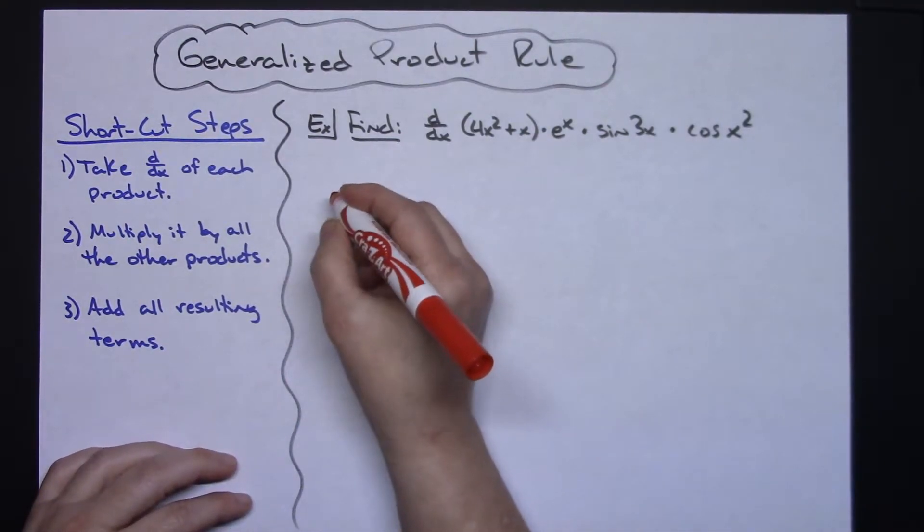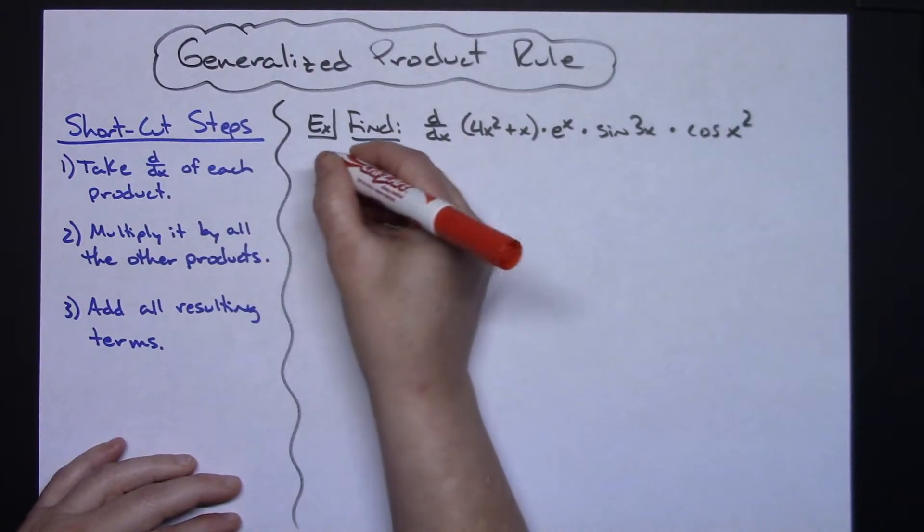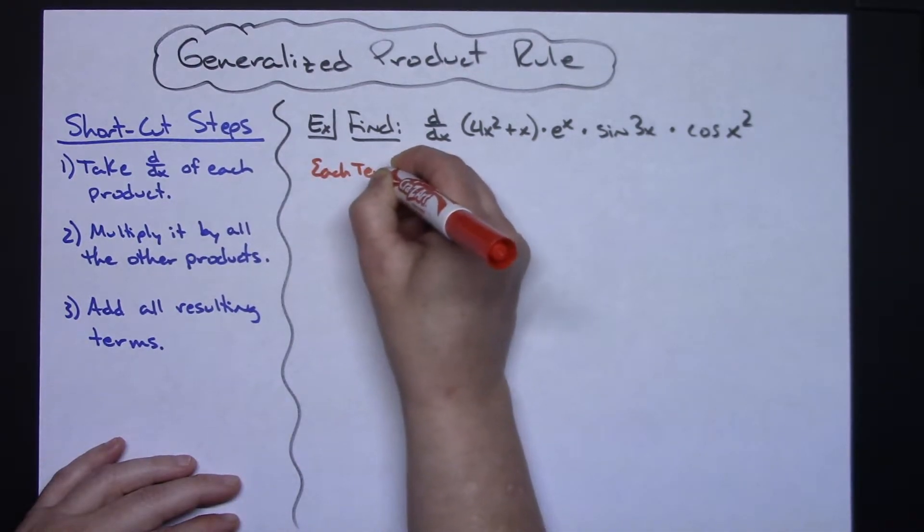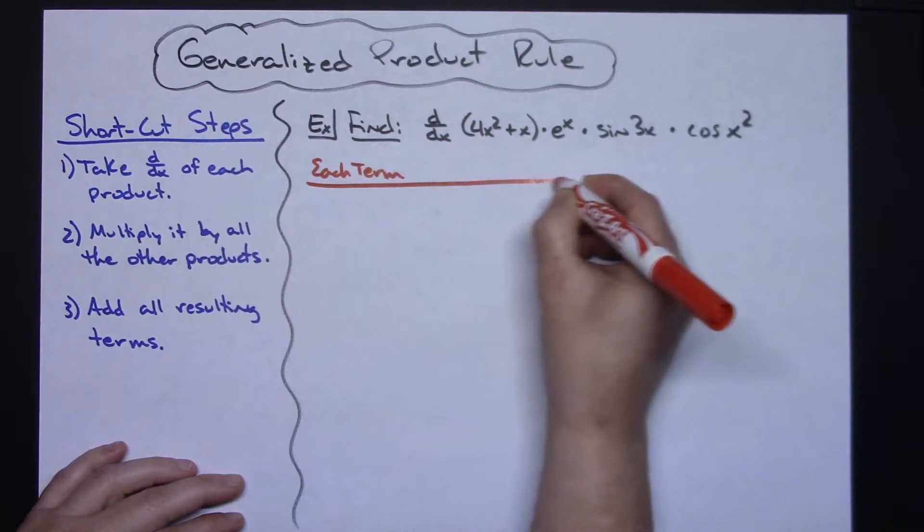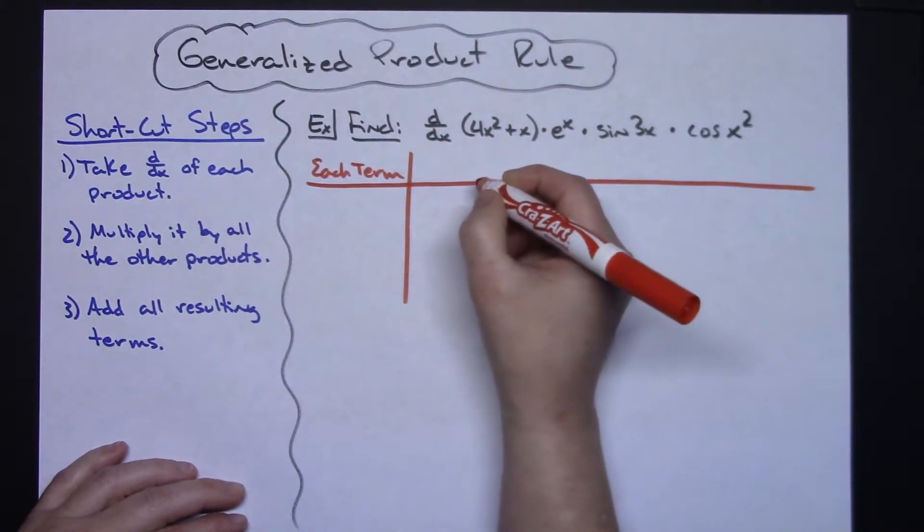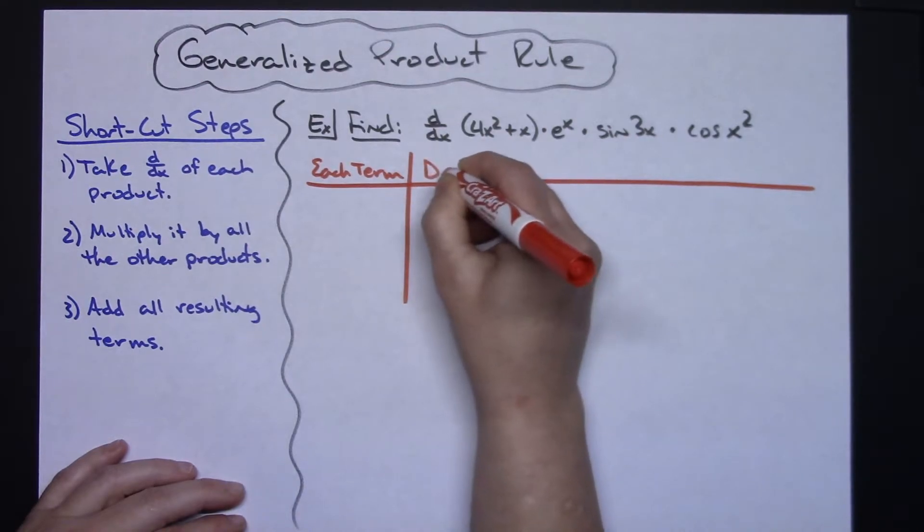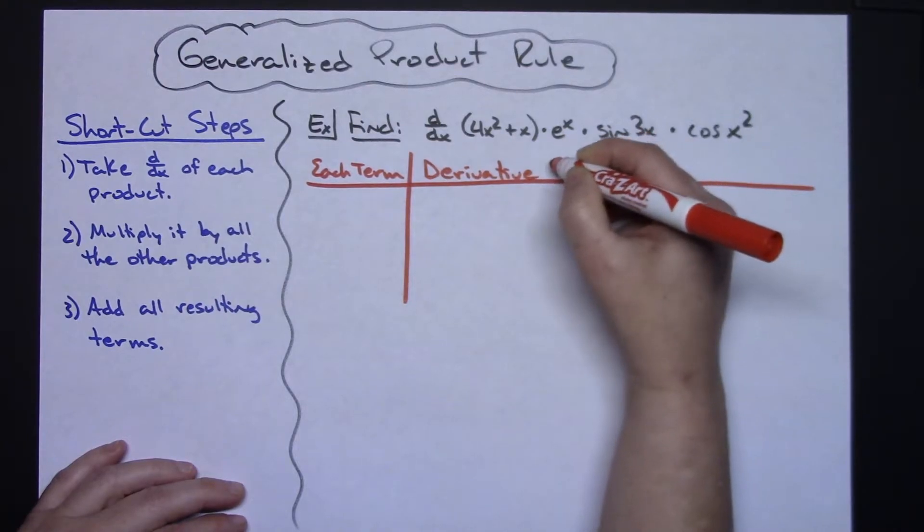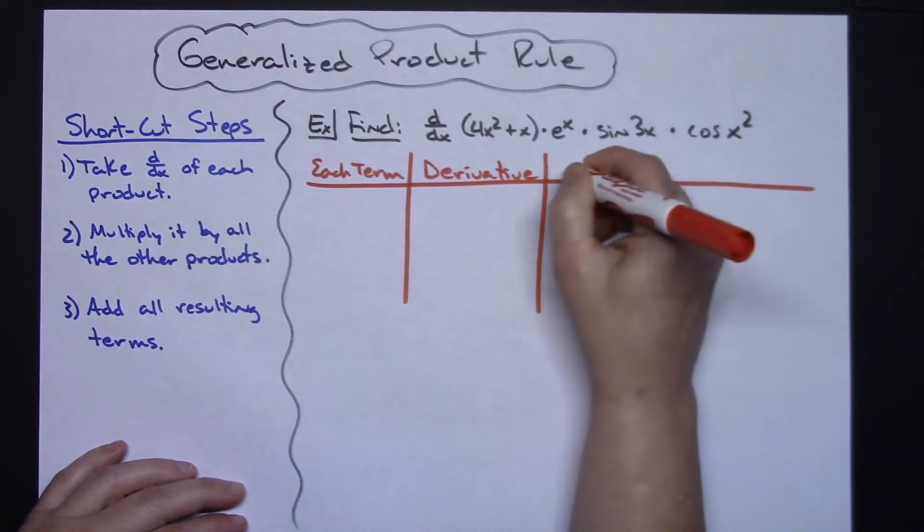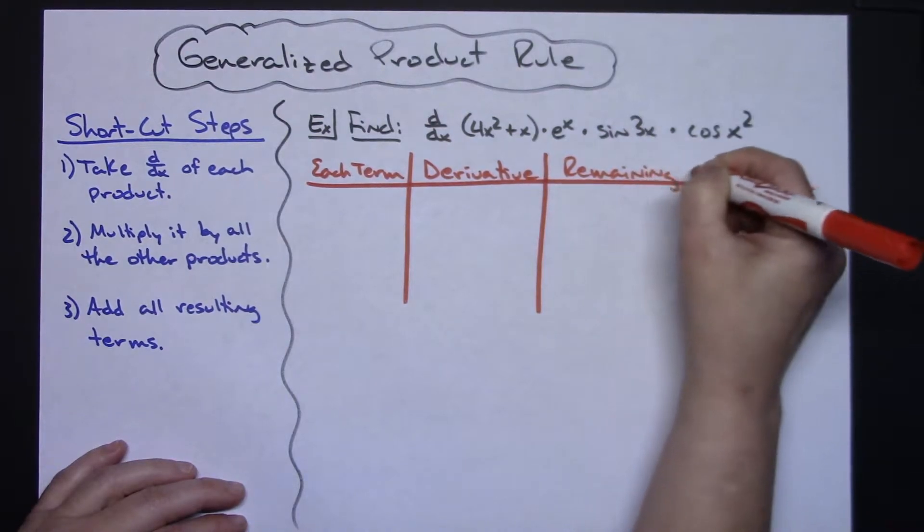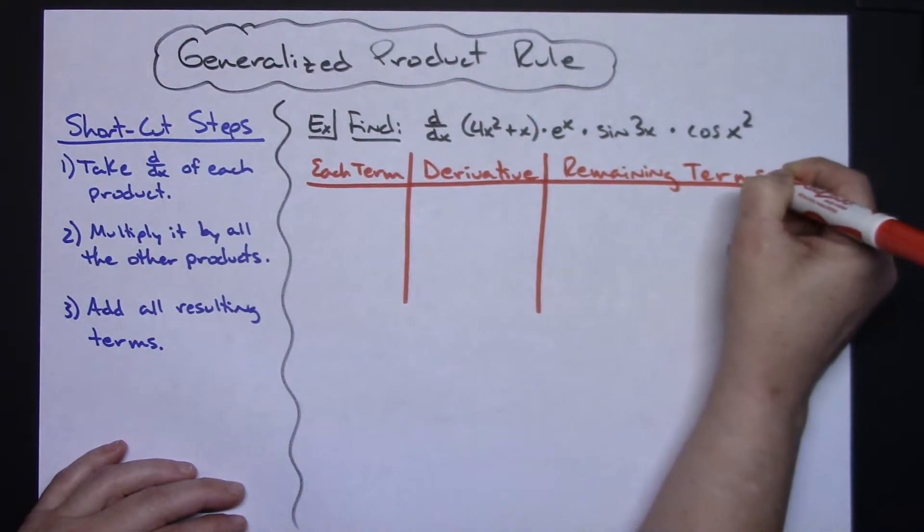So generally what I like to do is I like to write down each term. So in my box I'm gonna have each term, so I'm gonna have a column for each term. And then I'm going to have the derivative of that term and then I'm gonna have the remaining terms and we're gonna keep this organized. And it's gonna kind of go kind of quick here.